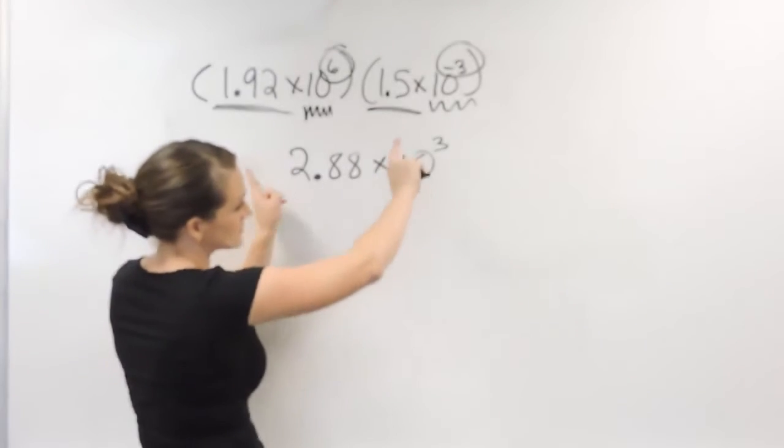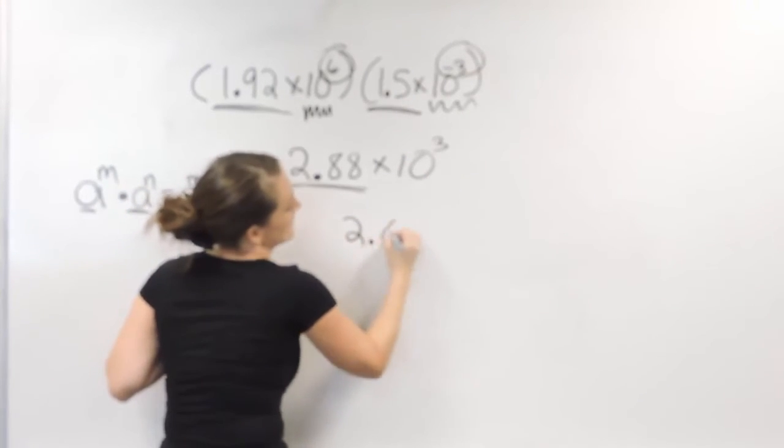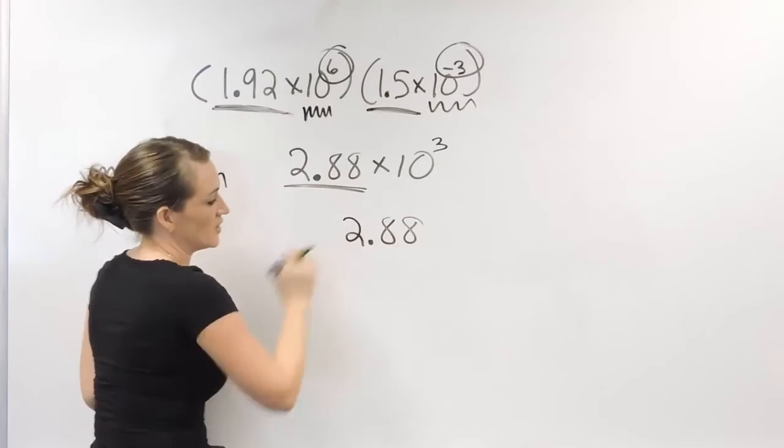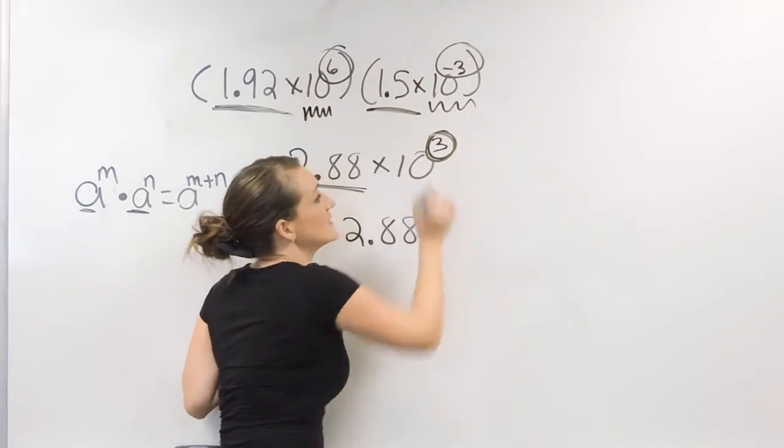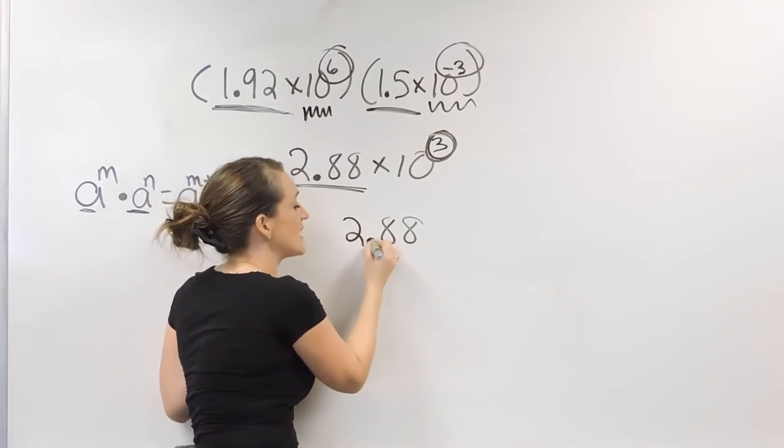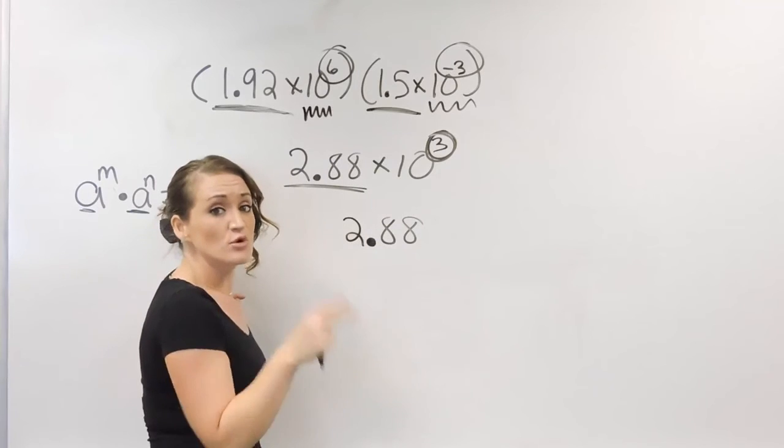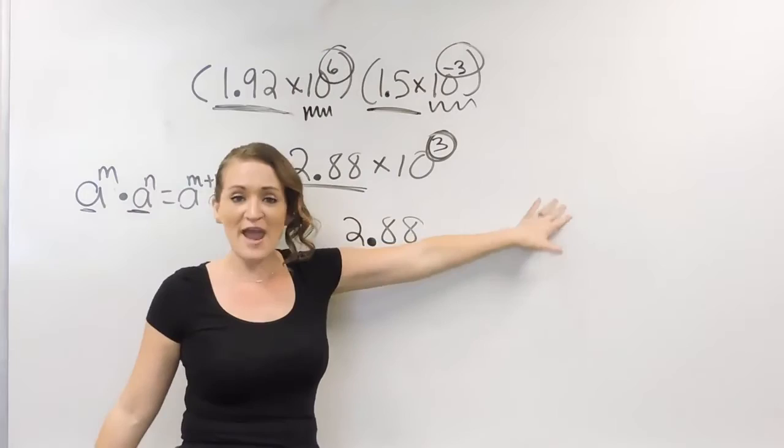Now when you take scientific notation to a regular number, always start by rewriting your decimal that you have there. Then always look at your exponent. Our exponent is a positive 3. What that tells us is that we're going to take our decimal and we're going to move it 3 times in the positive direction.